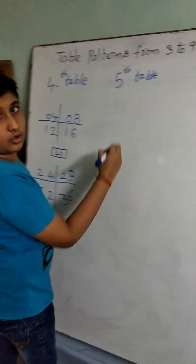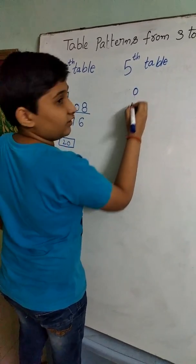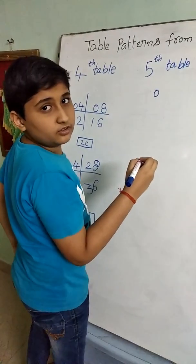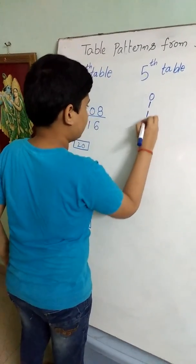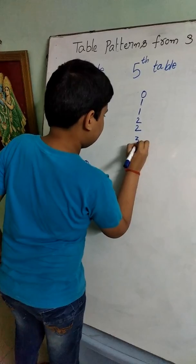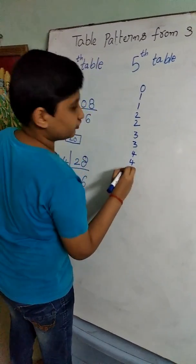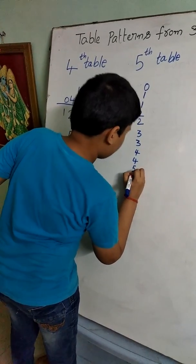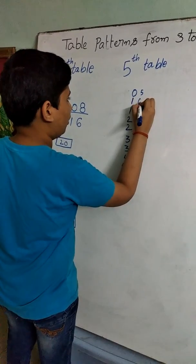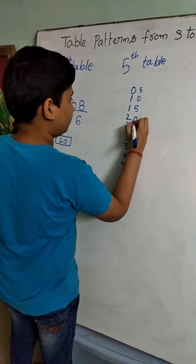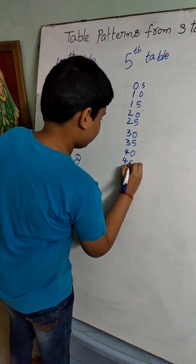The 5th table is so easy. We should write the numbers from 0, twice. 0 to 5: 1, 1, 2, 2, 3, 3, 4, 4, and last 5 we should keep 1. And we should write the same like 5, 0, 5, 0, 5, 0, 5, 0, 5, 0, 5, 0, 5, 0.